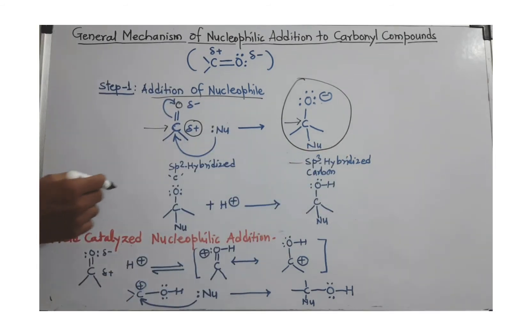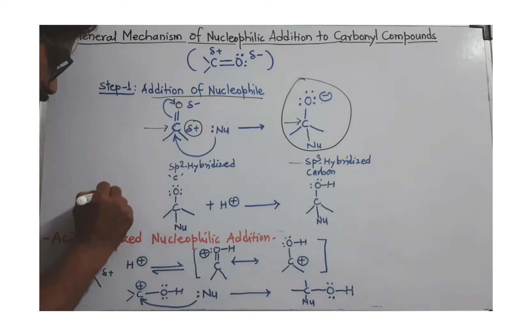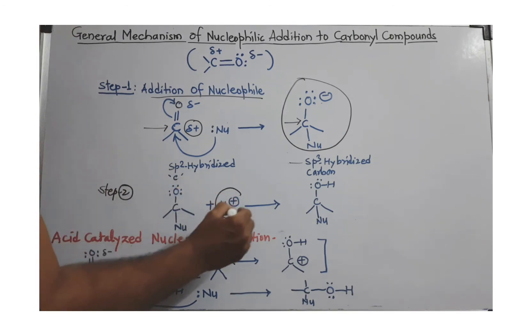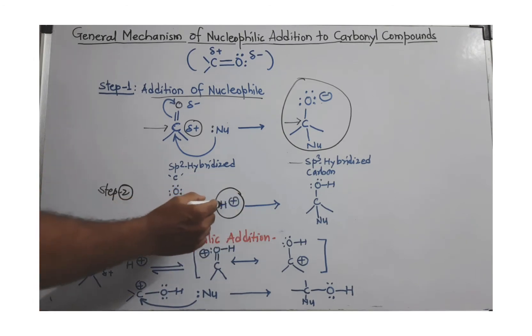In the next step, step 2, there is a proton present in the molecule. That proton or any positive charge can join this negatively charged oxygen by taking a pair of electrons.